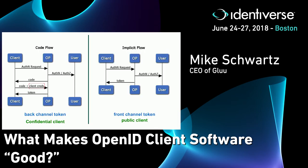The terms front channel and back channel used to confuse me when I first started. Front channel is something that uses the browser; back channel is like an API call — a server-to-server call. That's a really important distinction because the browser can have malware — all sorts of stuff can go wrong. It's much riskier to do stuff through the front channel than on the back channel, where it's just more secure on the back end than on the front end.